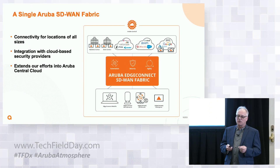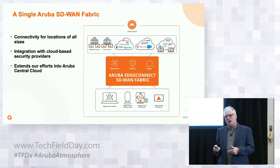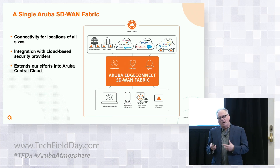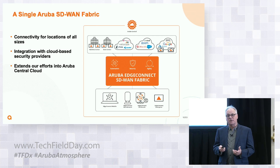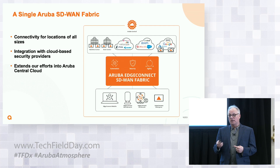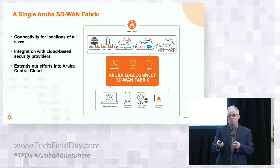Edge Connect Micro Branch is an announcement we did in early December, December 7th. What we've done is taken our remote access points and added SD-WAN-like features — features like the ability to prioritize applications and the ability to look at the health of connections. Some of our APs can use multiple WAN transport services and choose which one is operating better.